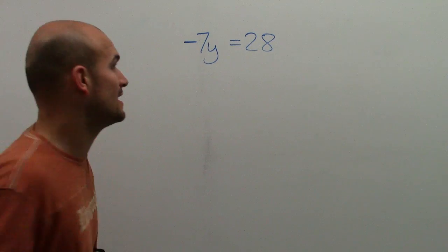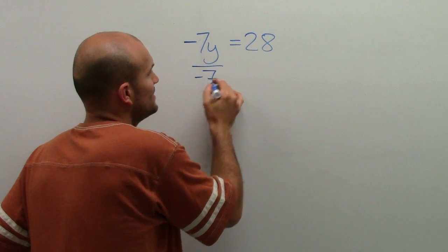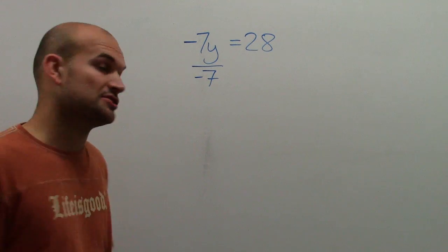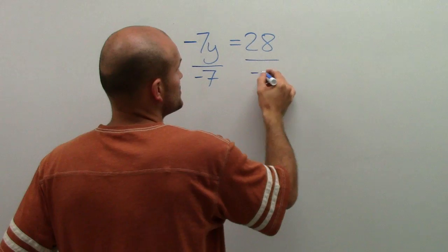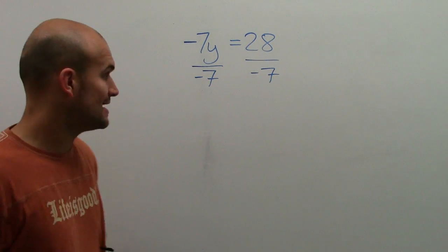Well, here it's being multiplied by -7, so I need to do the opposite of that, which would be to divide by -7. Now I have to use my division property of equality to produce equivalent equations, so I'm going to divide by -7 on both sides.